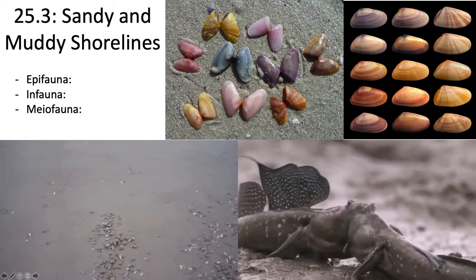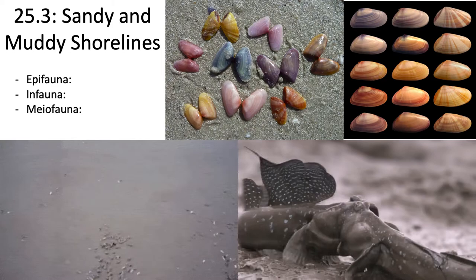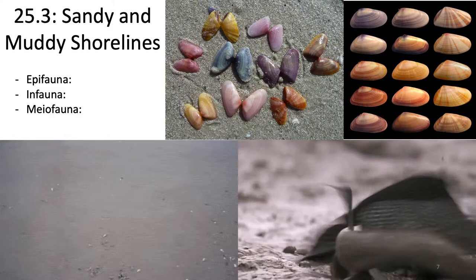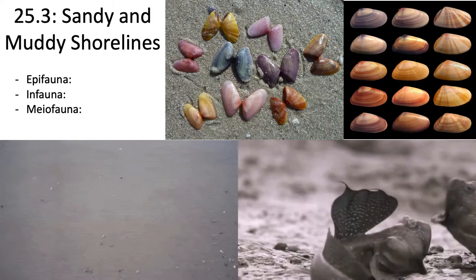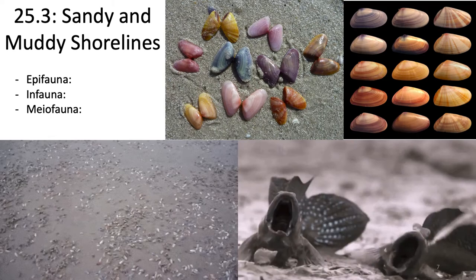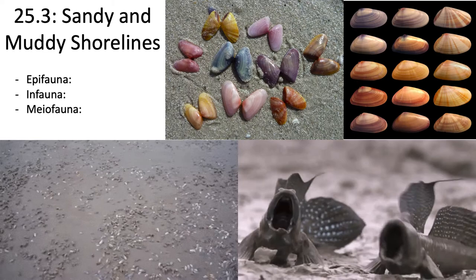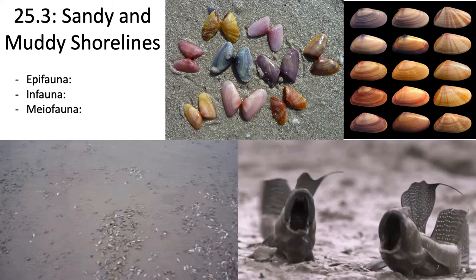That was rocky shorelines. Now let's talk about sandy and muddy shorelines, which have very similar stratification and zones, but more gradual because they're sandy. Sandy shorelines are produced by the weathering of rock that creates sand. The size of the sand will determine water retention during low tide and the ability of animals to burrow. Beaches with gradual slopes sometimes have organic material that settles from the water, making them muddier rather than sandy.